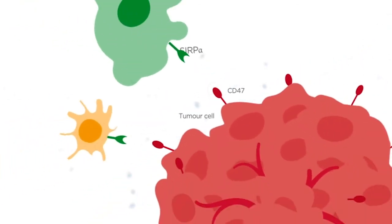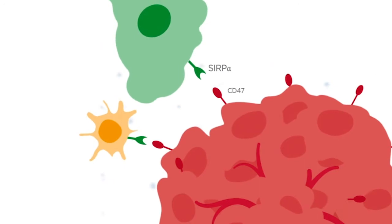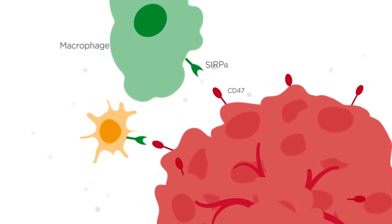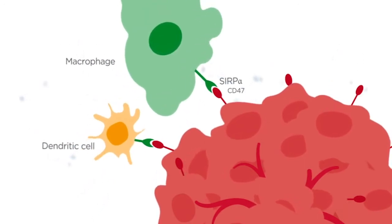CD47 interacts with SIRPα, a cell surface molecule on myeloid cells such as macrophages and dendritic cells,